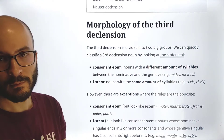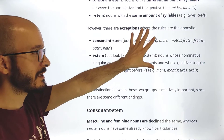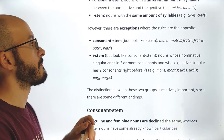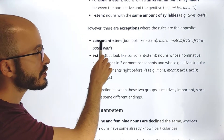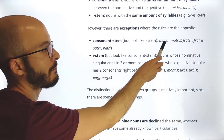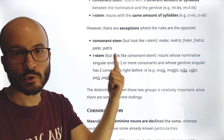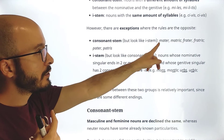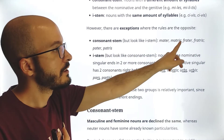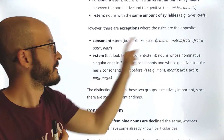Of course, there are some exceptions. We have consonant stem nouns that look like e-stem. For example, 'mater, matris' — 'mater' has two syllables and 'matris' also has two syllables, so it looks like e-stem, but it's actually consonant stem. The same applies to 'frater, fratris' and 'pater, patris' — mother, brother, father.